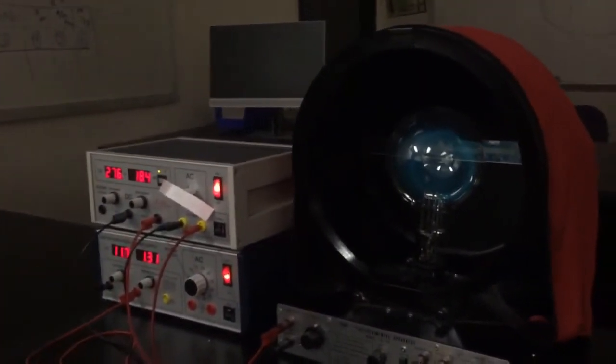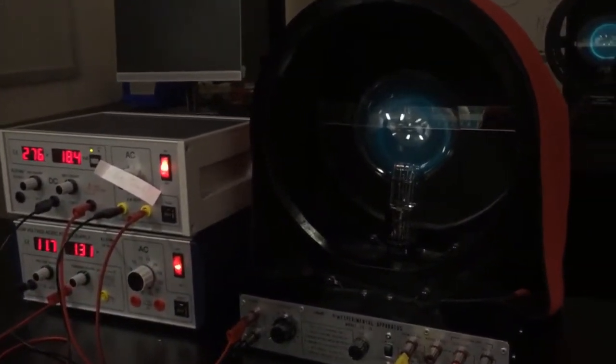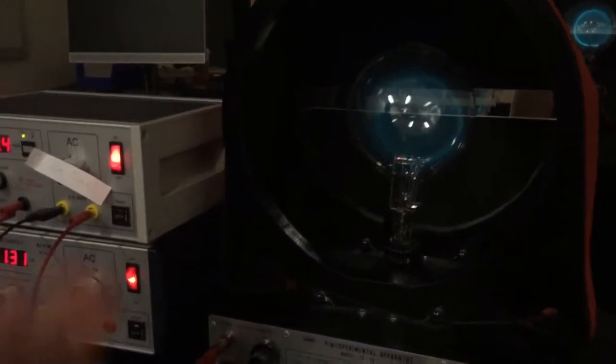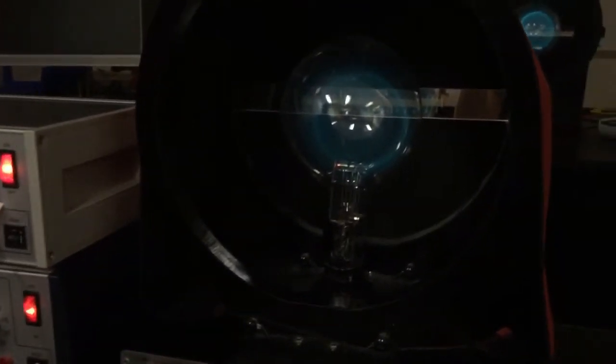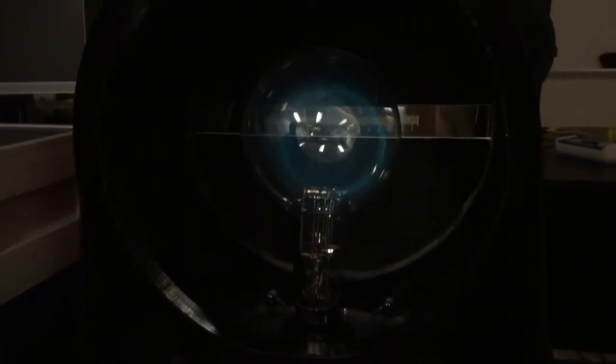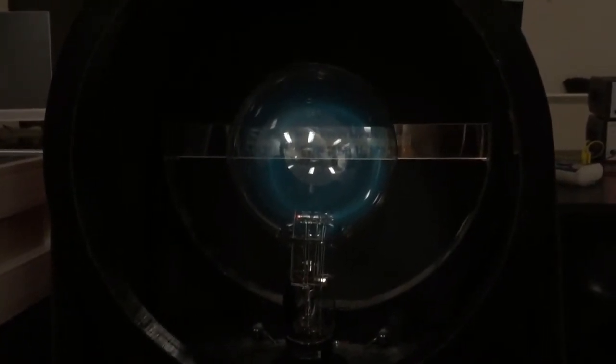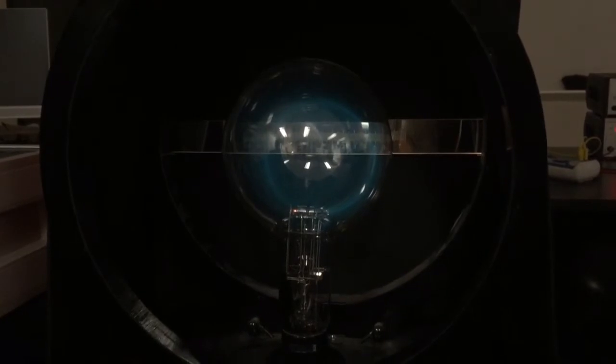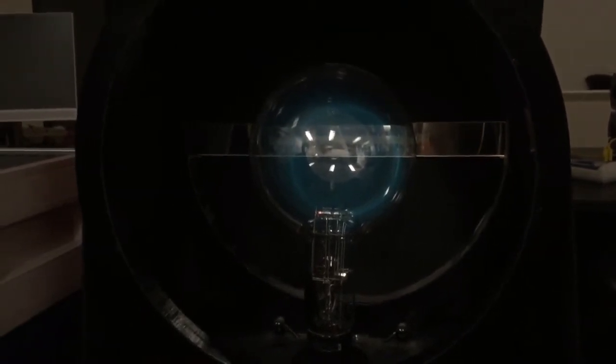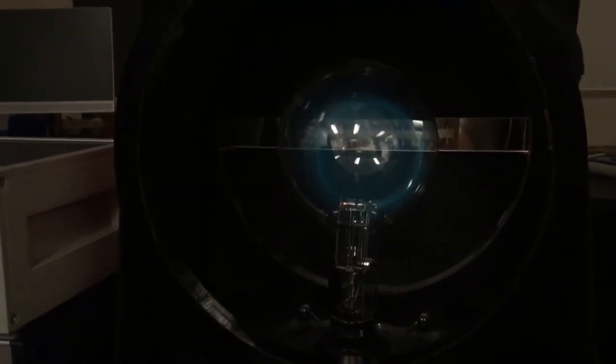This experiment is used to find the charge to mass ratio of the electron. We know the magnetic field of these coils, and we can use the magnetic field and the current going through the coils to find this charge to mass ratio.